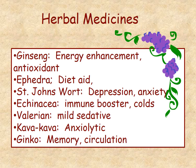A few herbal medicines to know: ginseng is used for energy enhancement and is considered an antioxidant. Ephedra was taken off the market after it was misused as a diet aid and caused deaths. St. John's Wort is used for depression and anxiety and has been in use for hundreds of years. Echinacea is an immune booster used to prevent colds. Valerian is a mild sedative. Kava kava is also used to help people sleep and is an anxiolytic. Ginkgo biloba is used for memory and circulation.